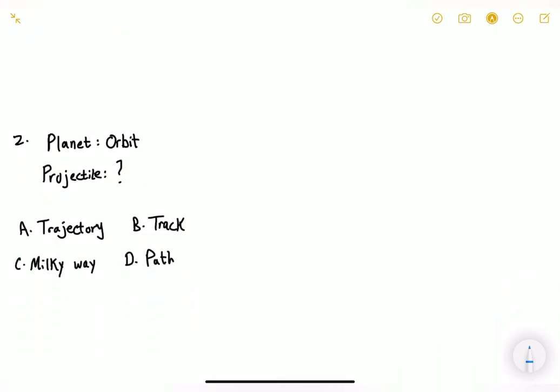So question number two says, planet orbit. So let's identify the relationship. The relationship is that this is a path that's traced by this, meaning the orbit is a path traced by a planet. So we're supposed to find blank, that is a path traced by a projectile. And what is a projectile? Projectile is a missile designed to be fired from a gun.